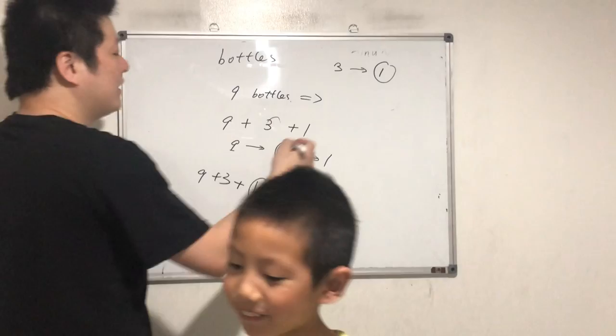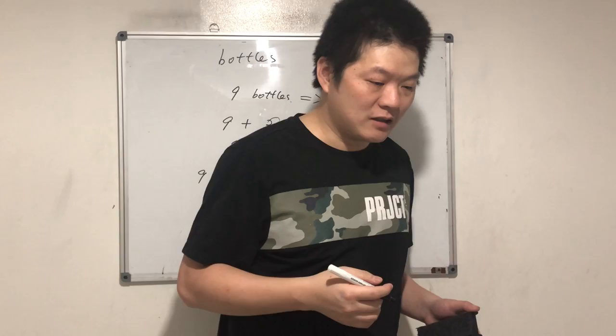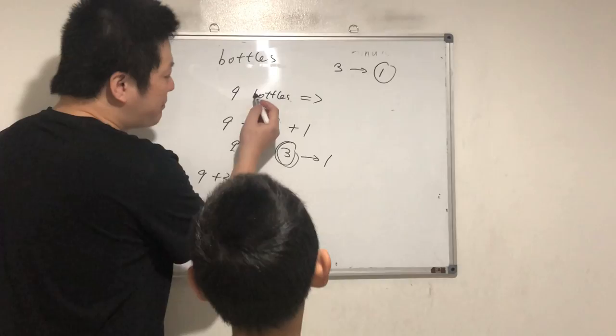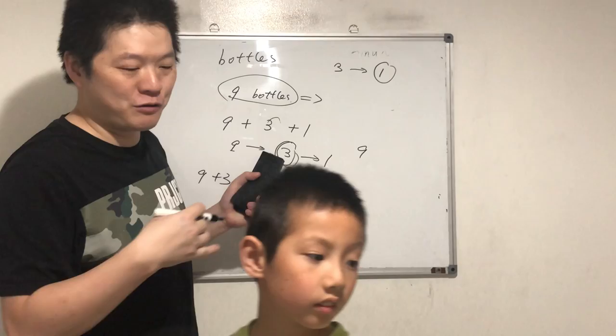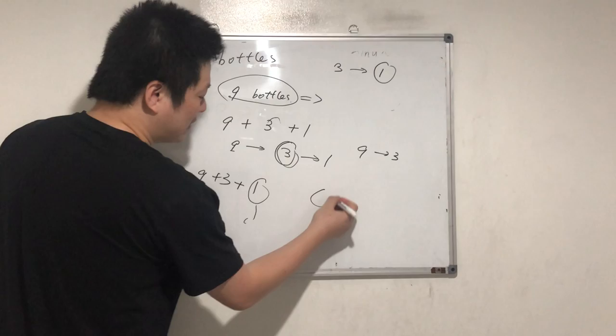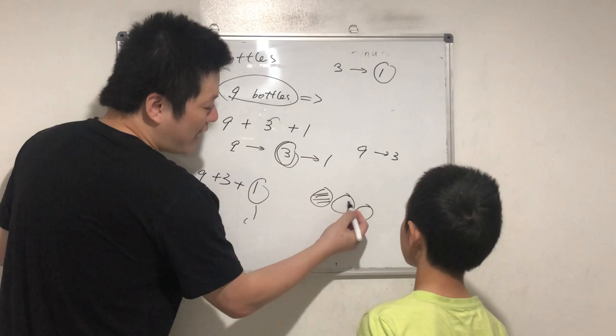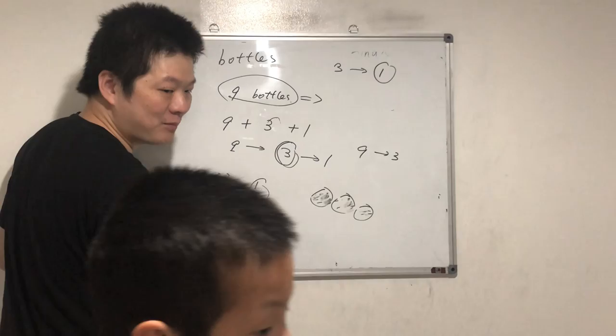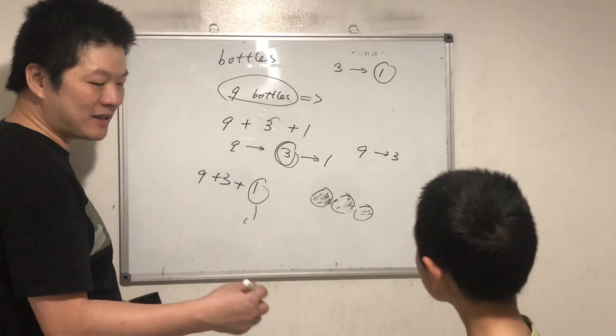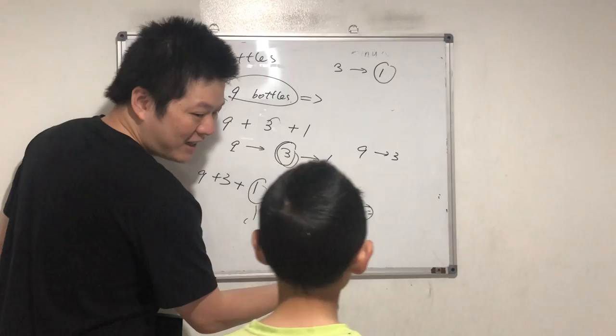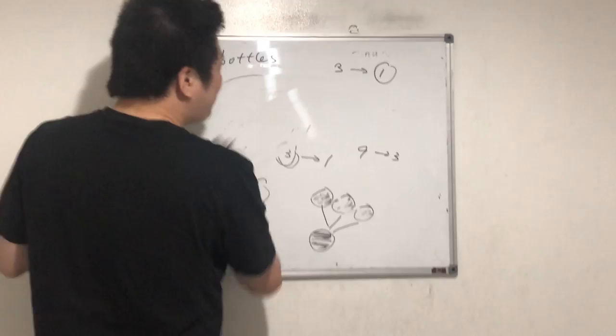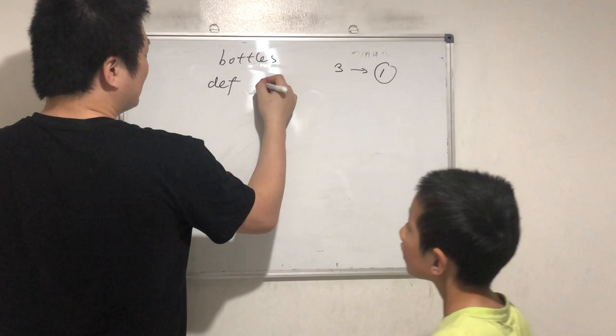Today the question is easy. What do you mean? Why is it nine to three and three to one? Nine bottles — you drink nine bottles, then with nine empty bottles you can exchange for another three new bottles. When you drink all of them they become empty, and every three empty bottles gives you one new bottle.